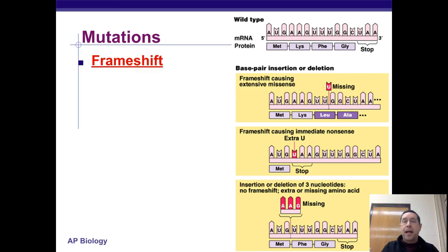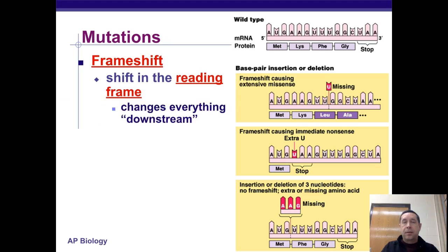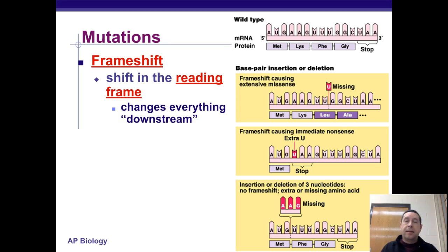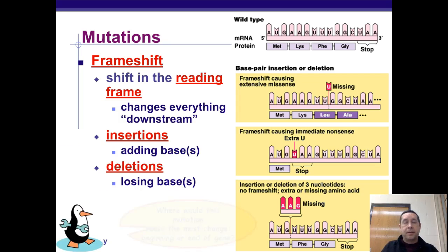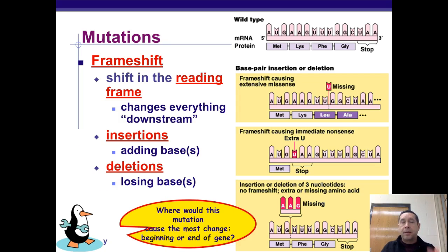Frameshift mutations are caused by adding or deleting bases, which changes the reading frame. Every codon from the point of the mutation down to the end of the gene is affected, so where in the gene the frameshift occurs has a big effect on what kind of mutation results — missense or nonsense. You won't see silent frameshift mutations. Insertions are adding bases, deletions are losing bases, and both can cause a change in the reading frame.